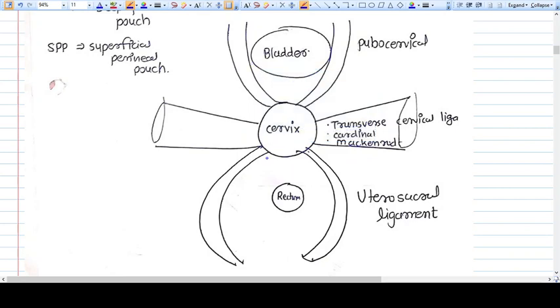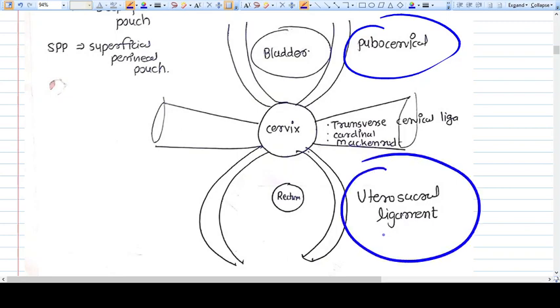The uterus is supported anteriorly by the pubocervical ligament, posteriorly by the stronger uterosacral ligament, and on both lateral sides by the transverse cervical ligament, or you may call it cardinal ligament, or some people call it Mackenrodt's ligament. These particular ligaments are the main support of the uterus.